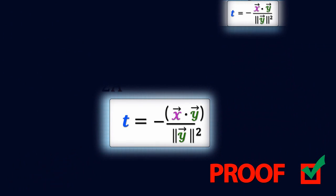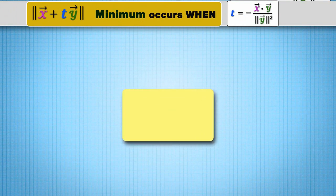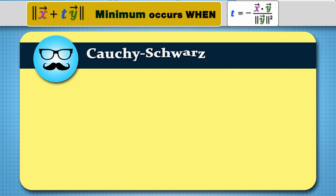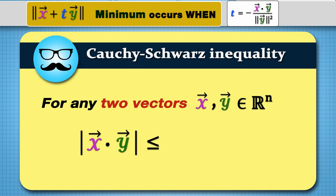Now we use this result to derive one of the most important inequalities in mathematics. Theorem: Cauchy-Schwarz inequality. For any two vectors x and y in Rn, the absolute value of x dot y is less than or equal to the norm of x times norm of y.